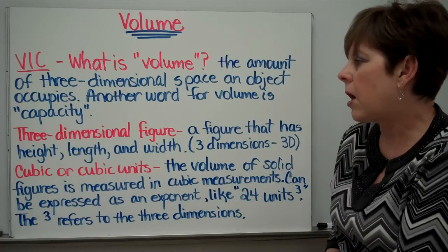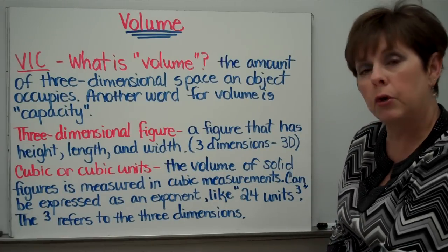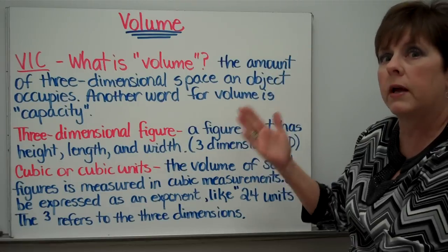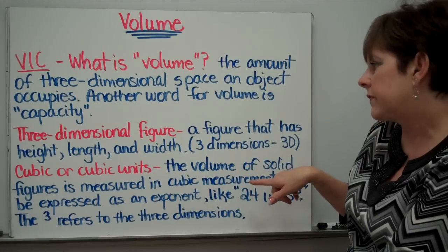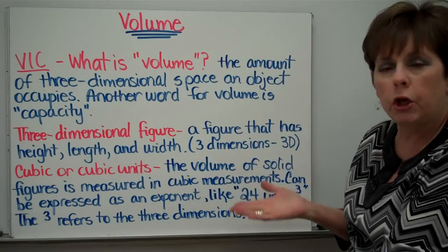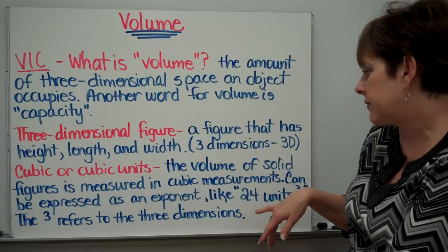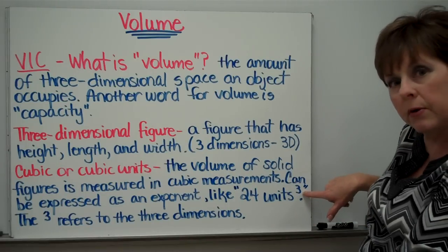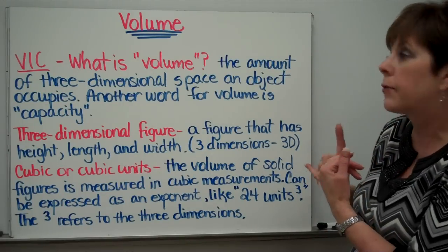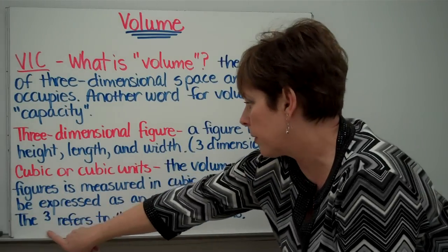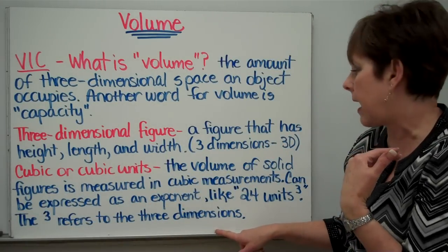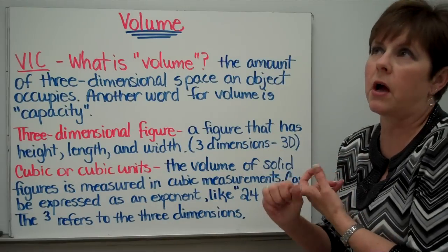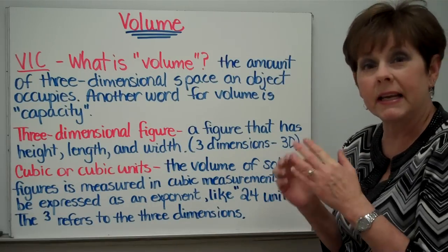We talk about things that are cubic or cubic units. It does refer to a cube. A cube has height, width and length. The volume of solid figures is measured in cubic measurements. It can be expressed as an exponent. For example, this would be 24 cubic units. It's used as an exponent with a 3 there. Remember that 2 was squared. 3 refers to it being cubic. This 3 refers to the three dimensions: height, width and length. When we talk about volume, we express it in cubic units. When we talk about area, we express it in squared units.